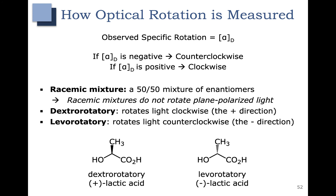We have two examples here — lactic acid. This enantiomer of lactic acid rotates in the positive direction, or clockwise, so it is dextrorotatory. This enantiomer of lactic acid rotates light in the negative direction, or counterclockwise, so it is levorotatory.